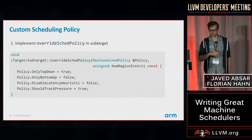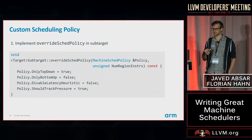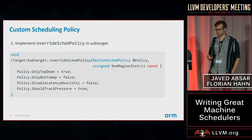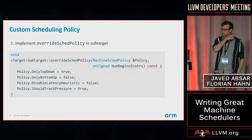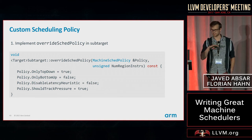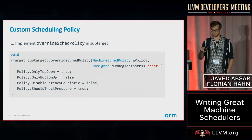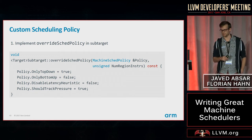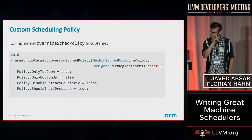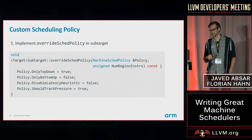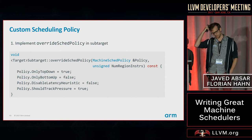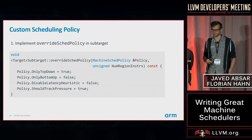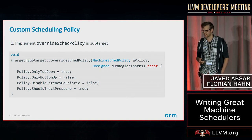Custom scheduling policies are high-level configuration used by the machine scheduler. To set your own policy, implement the overrideSchedPolicy function in your sub-target. You can configure scheduling directions — disable or enable only top-down or only bottom-up scheduling, which can be helpful for debugging. You can also disable certain heuristics, enable or disable register pressure tracking, and make other tweaks to guide scheduling decisions. For the full list of configurations, look at the MachineSchedPolicy class.